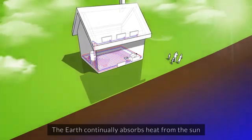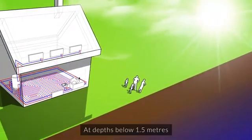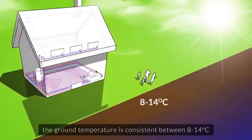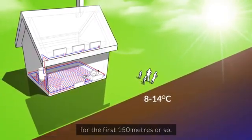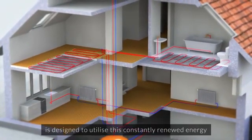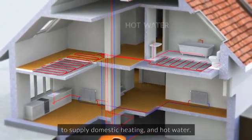The earth continually absorbs heat from the Sun and stores it in the ground below the surface. At depths below 1.5 meters, the ground temperature is consistent between 8 and 14 degrees Celsius for the first 150 meters or so. The ground source heat pump is designed to utilize this constantly renewed energy to supply domestic heating and hot water.